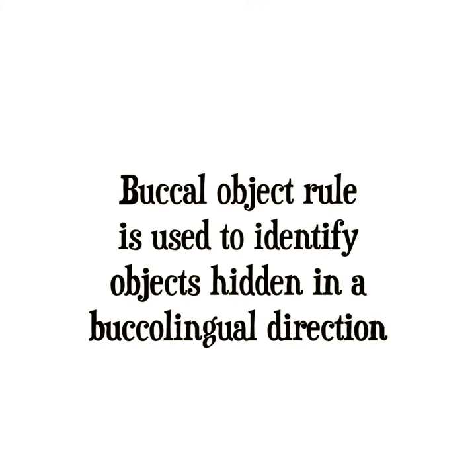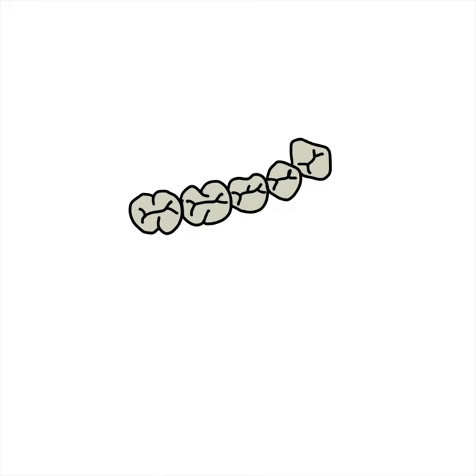The buccal object rule is used to identify objects hidden in a buccolingual direction. It states that if two objects and the X-ray receptor, all three of these are fixed,